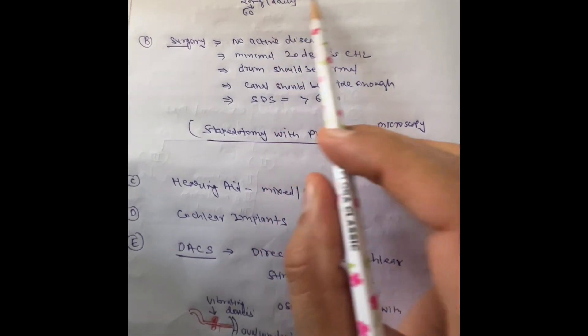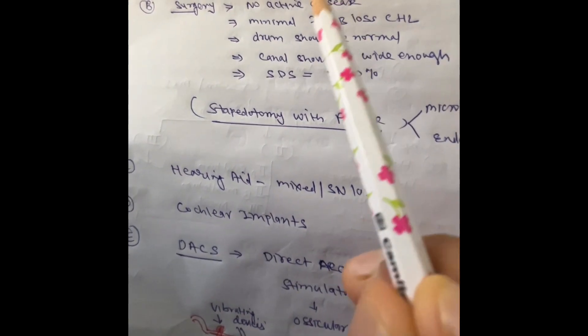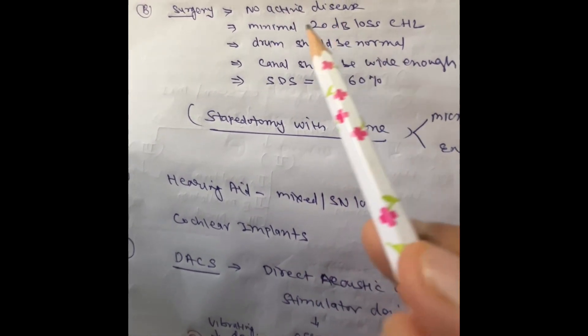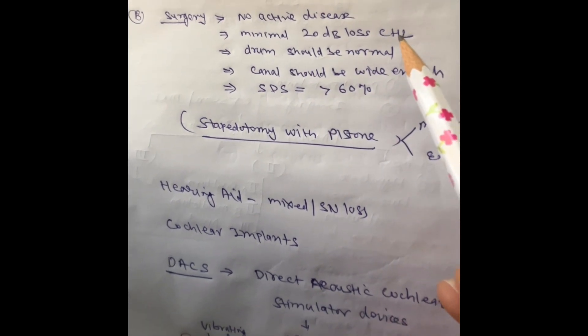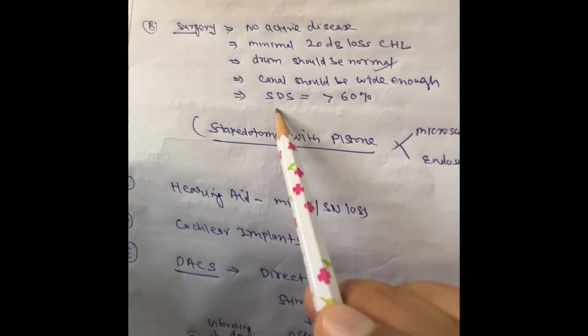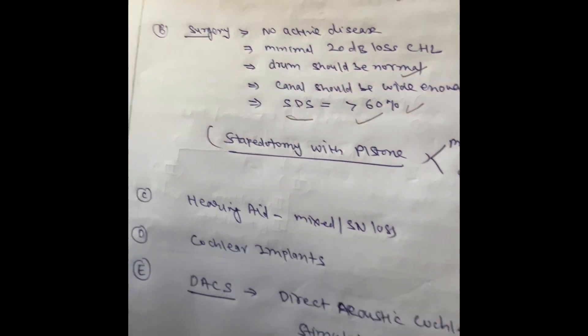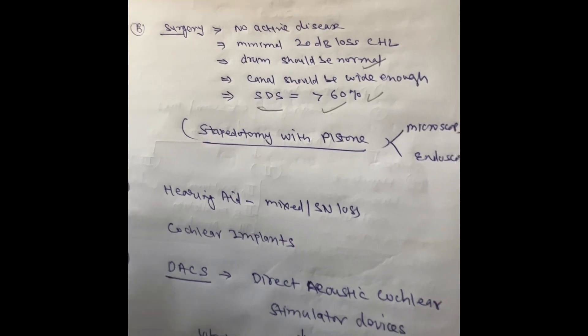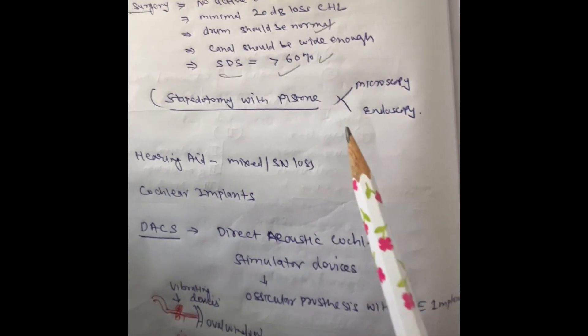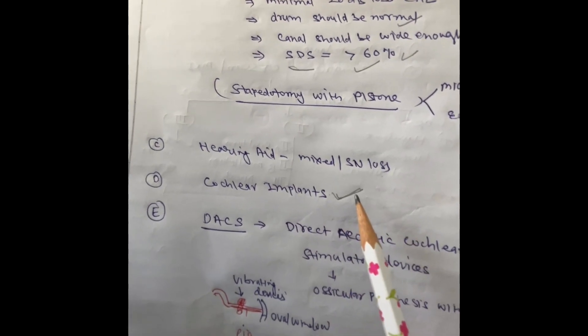For medical treatment, you can give bisphosphonate and sodium fluoride — 60 mg sodium fluoride — in active disease where sensorineural or mixed hearing loss is present. For surgery, the minimum recommendations are: no active middle ear disease, minimum 20 dB hearing loss, normal tympanic membrane, wide enough canal with no exostosis, and speech discrimination score more than 60 percent. Stapedectomy with piston can be done via microscope or endoscope. In mixed or sensorineural type, hearing aids can be given, and cochlear implant in far advanced otosclerosis.